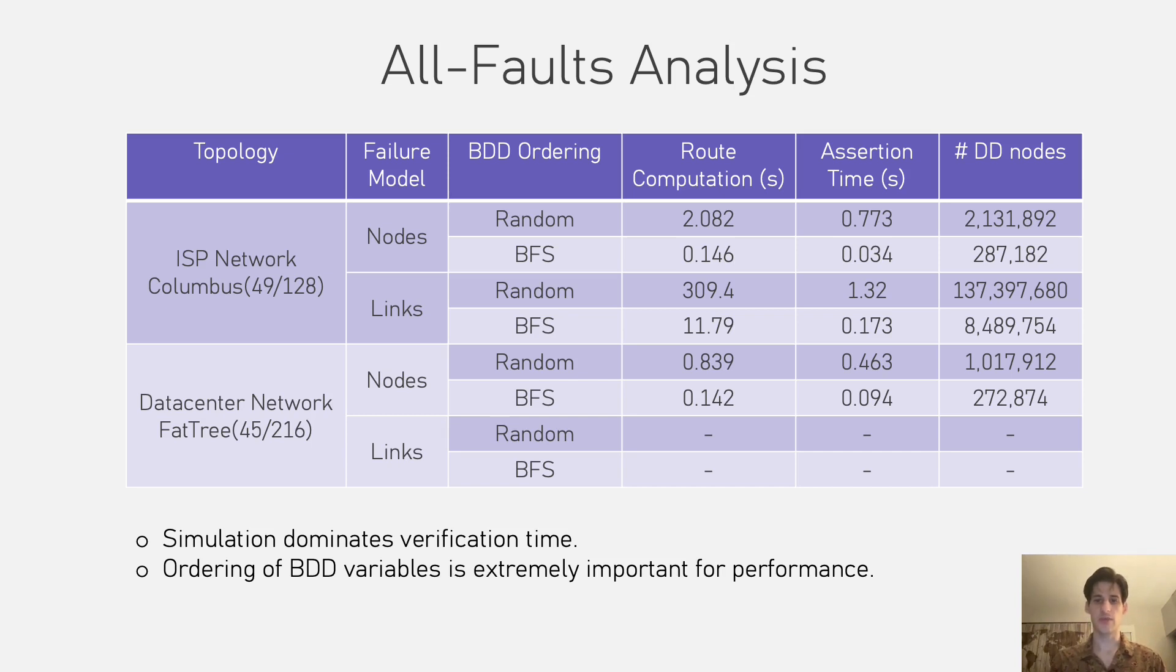Usually a good ordering is motivated by the application. In this case, we tried a random variable ordering and an ordering that's based on a breadth-first search from the destination node. Intuitively, a failed node or link that is close to the destination will have larger impact than a failure far from the destination.